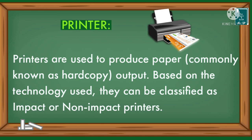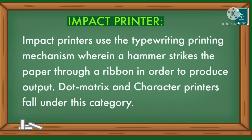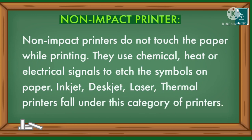Printers are used to produce paper output, commonly known as hard copy. Based on the technology used, they can be classified as impact or non-impact printers. Impact printers use a typewriting printing mechanism wherein a hammer strikes the paper through a ribbon to produce output; dot matrix and character printers fall under this category. Non-impact printers do not touch the paper while printing; they use chemical, heat, or electrical signals to etch symbols on paper. Inkjet, deskjet, laser, and thermal printers fall under this category.